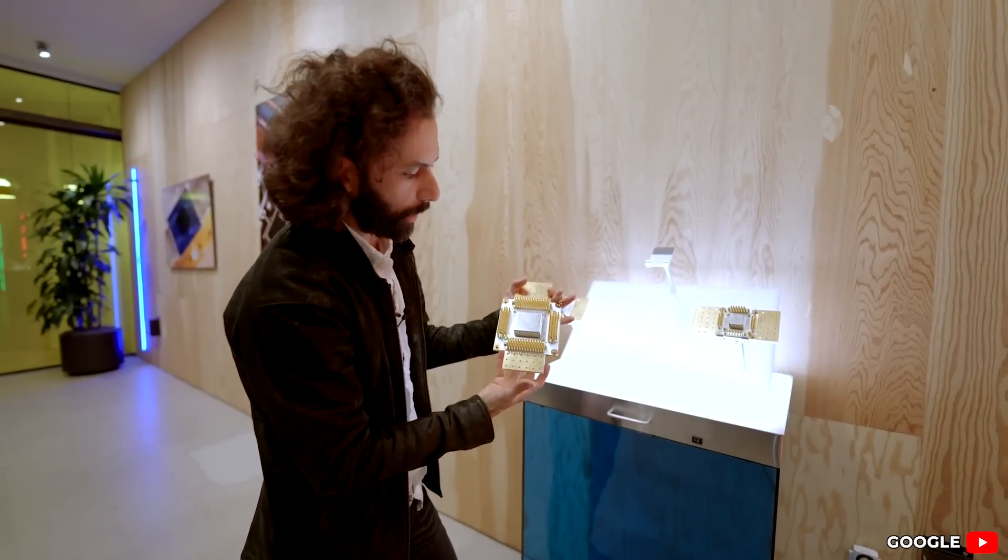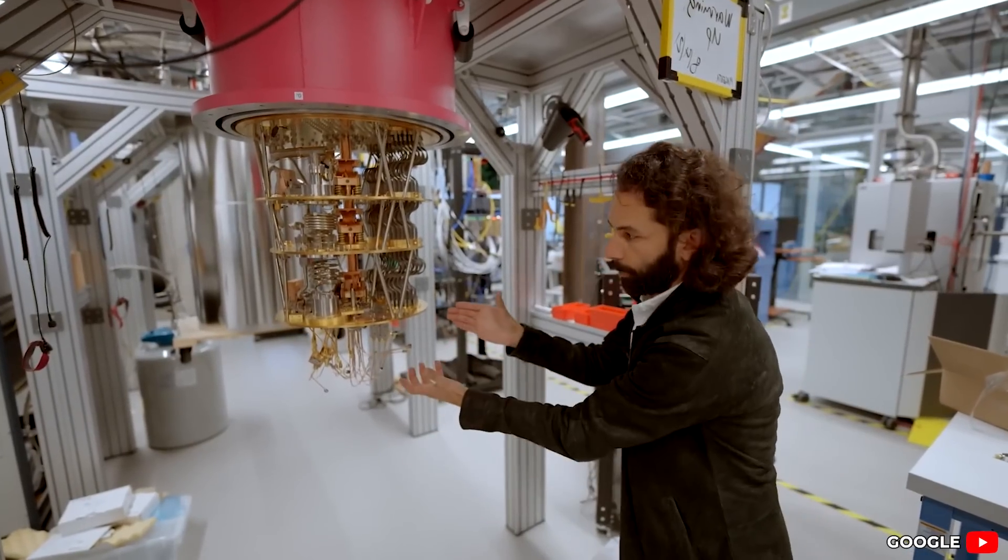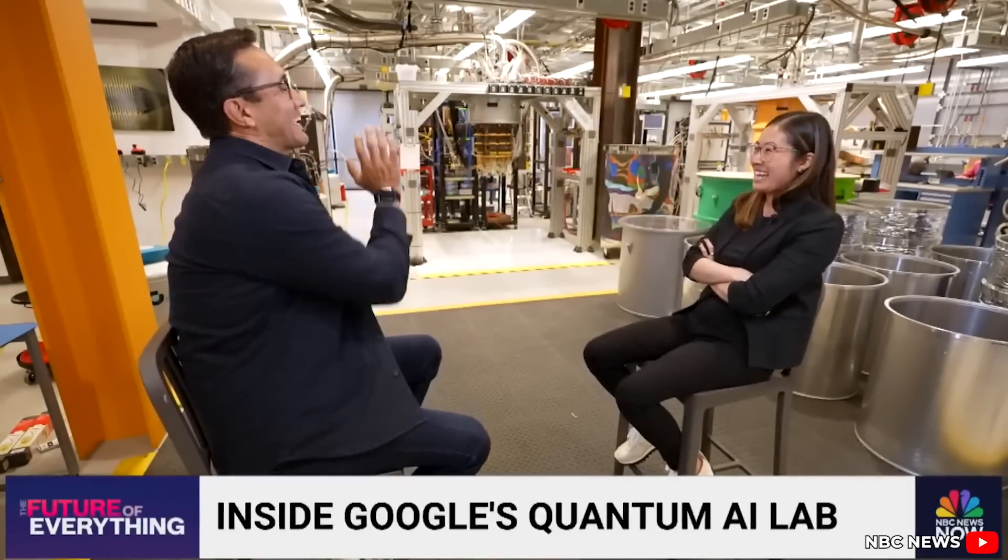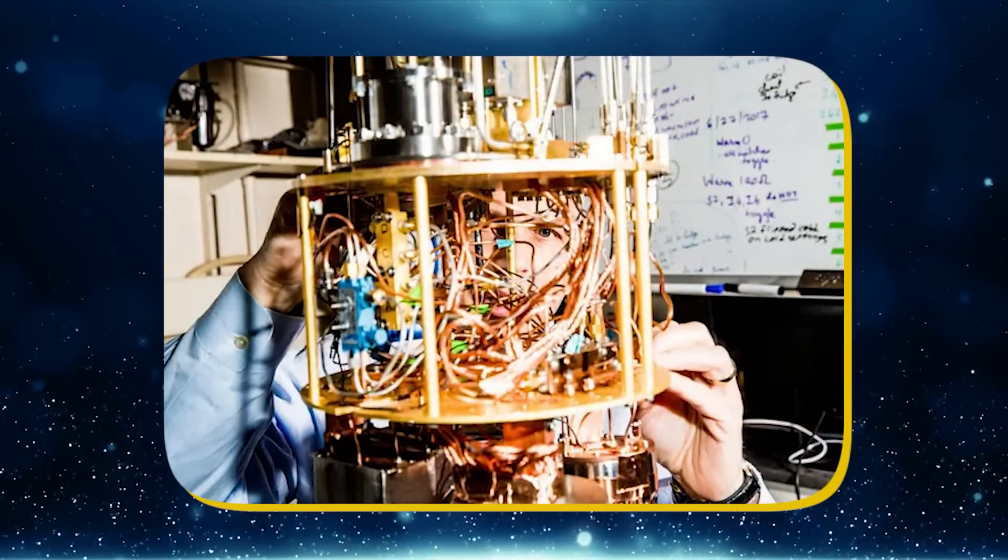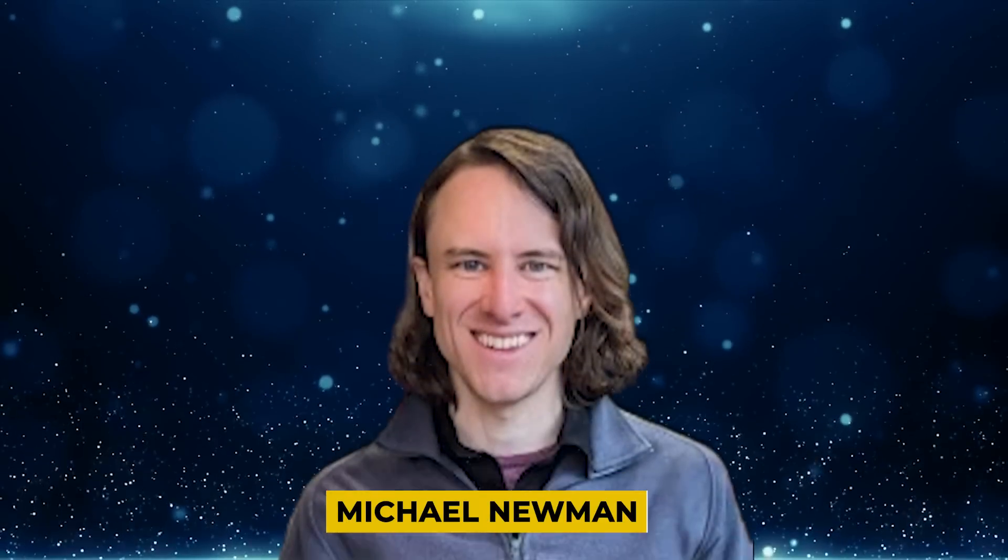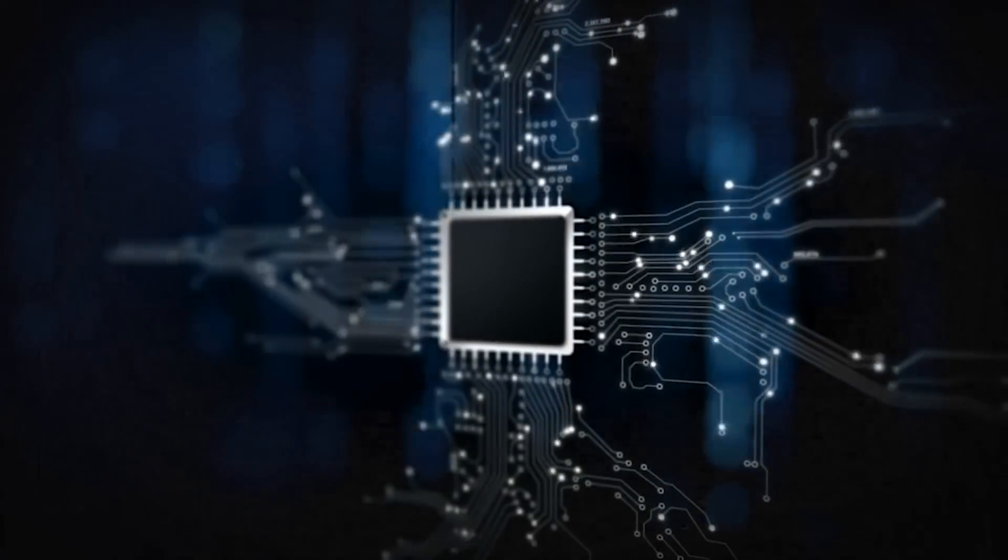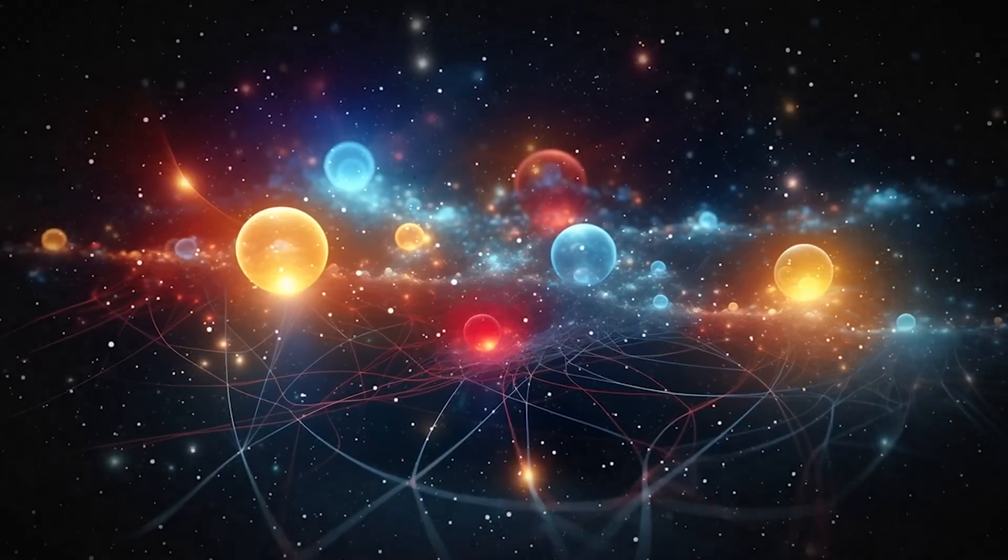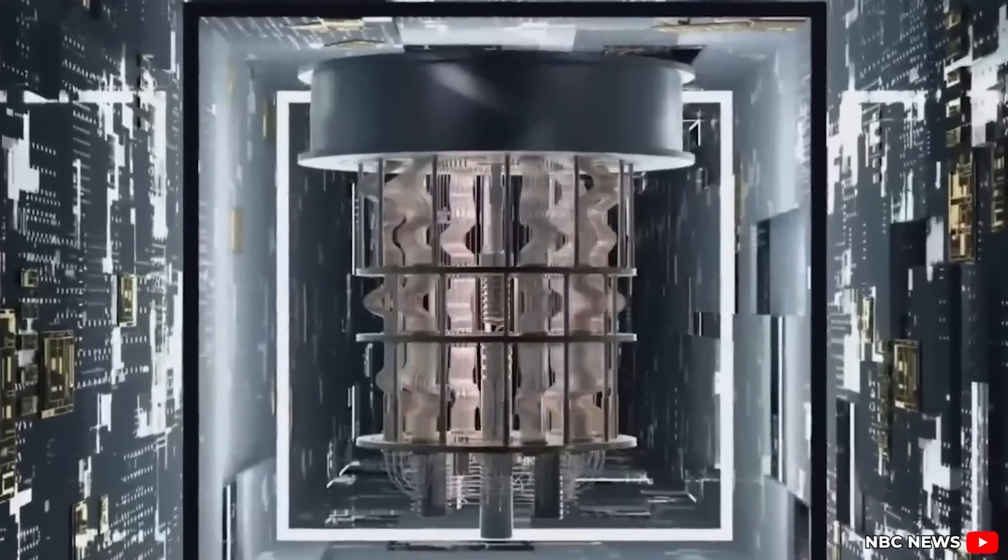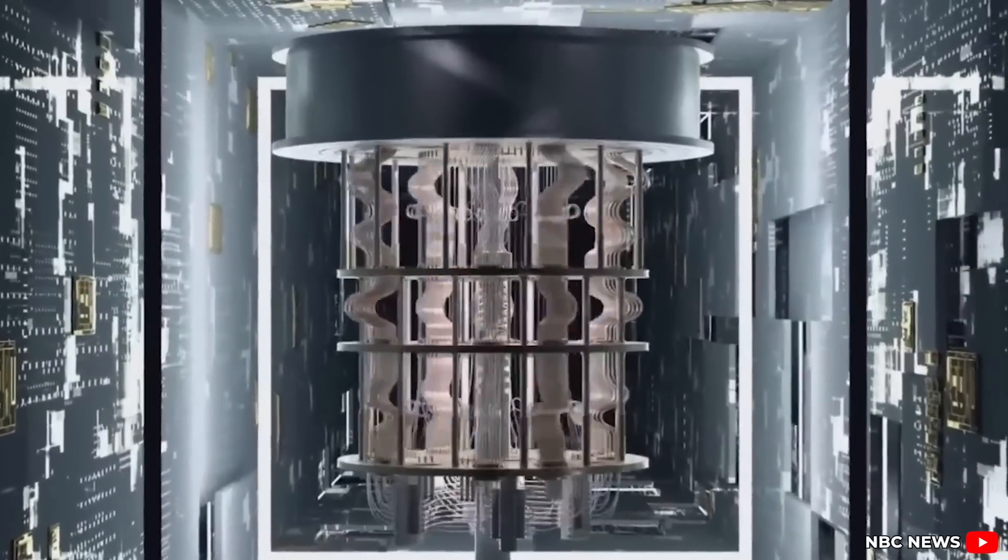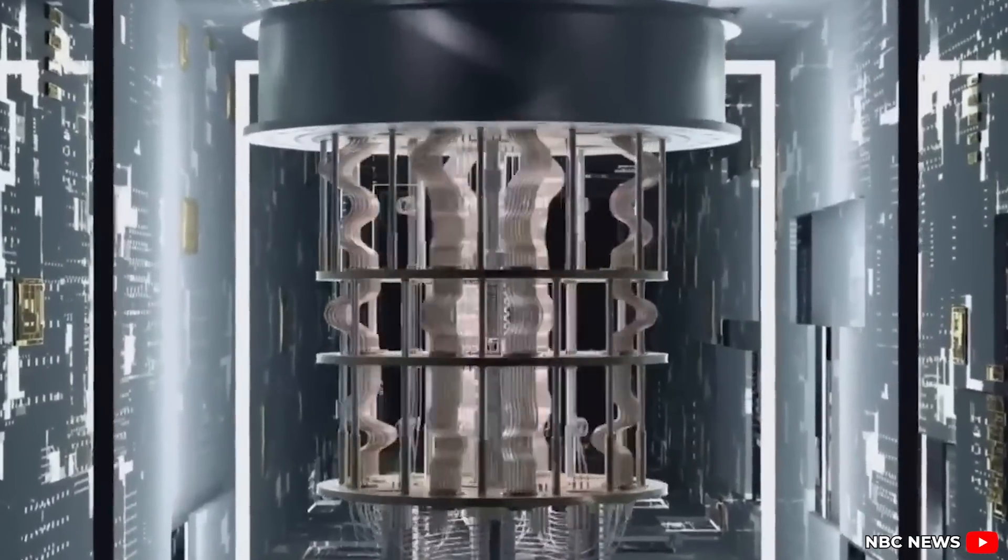With Willow, Google proved that quantum systems could grow larger, become more powerful, and yet maintain or even improve their accuracy. It was the first real hint that practical quantum computing might actually scale up in our lifetimes. Michael Newman from Google summed it up perfectly: the hope is that as you make these collections larger, there's more error correction, so your qubits become more accurate. Normally, that's not how quantum machines behaved until Willow came into the picture.